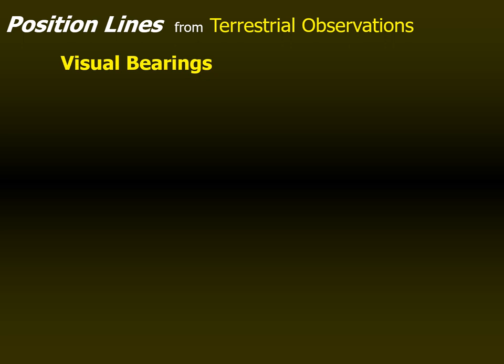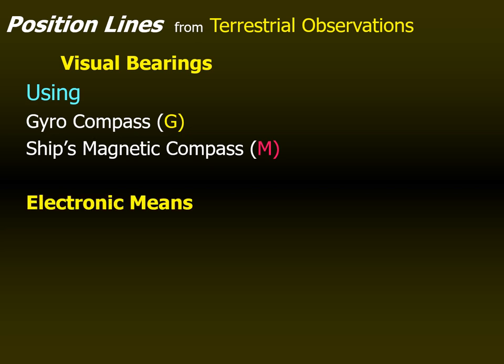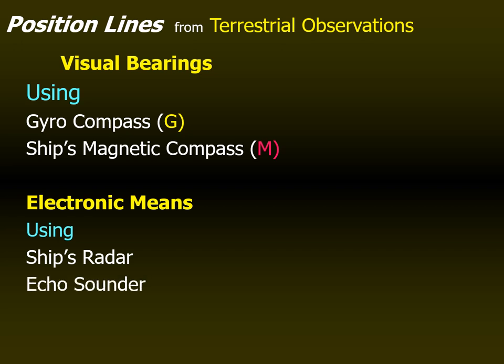Let's start with position lines from terrestrial observations, beginning with visual bearings. Visual bearings can be obtained by using the gyro compass, which gives us the true bearing, and the ship's magnetic compass, which gives us the compass bearing. Because the ship's magnetic compass is also influenced by the ship's structures and cargo on board, we do not call it a magnetic compass bearing — we call it a compass bearing.